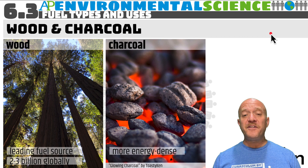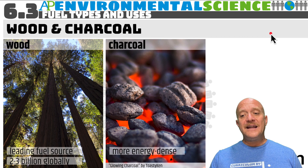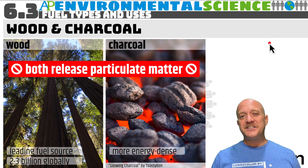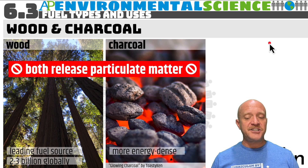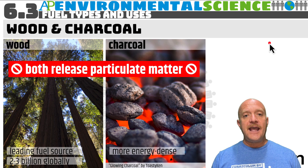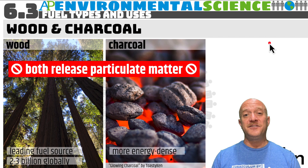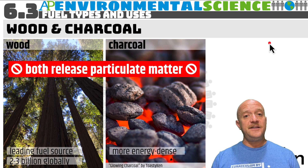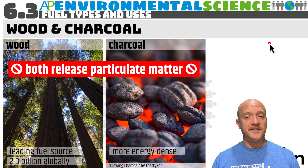Both of these fuels can be dangerous because they can release particulate matter — the ash and soot that comes when you burn them. If combustion is done indoors, which it is for cooking in some countries, you need exhaust ventilation because this particulate matter can damage the respiratory system and lead to other illnesses, which we'll discuss in future videos.